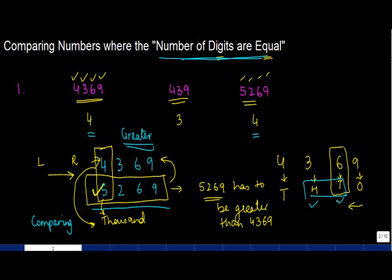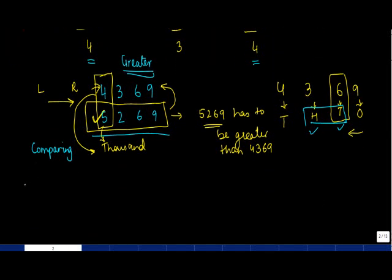But let me give you another number over here. So let's say for example, if I say that I also have 5, let me not confuse you with this one. Let me take another example. So let's say for example, if I have to tell you, can you find out which number is greater 5269 or 5342?